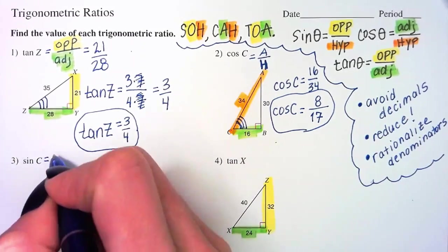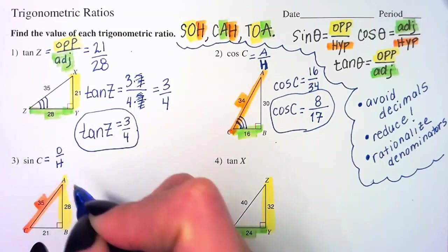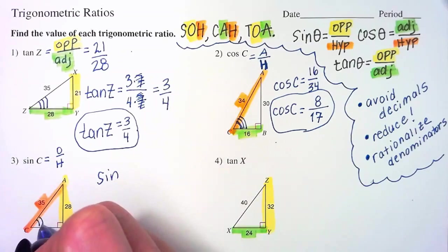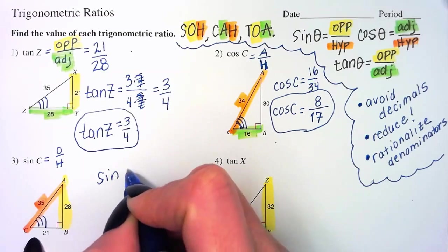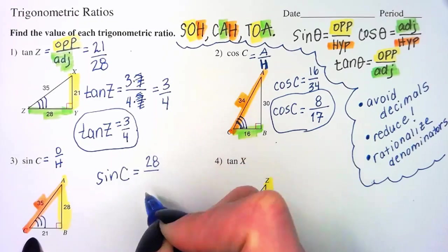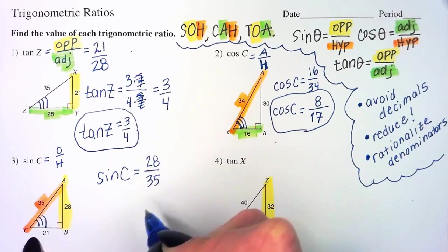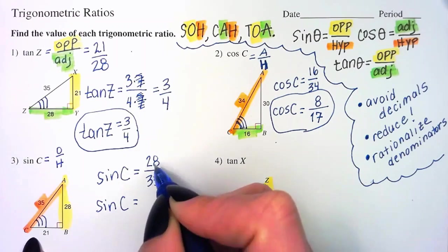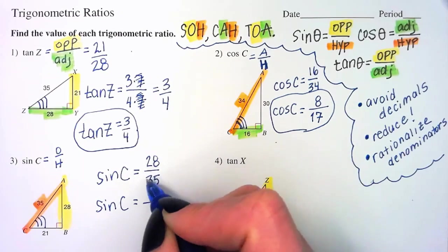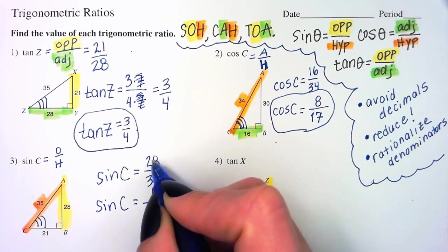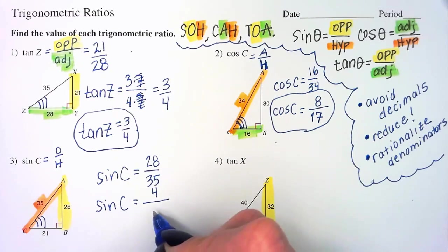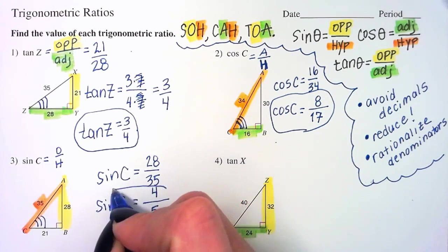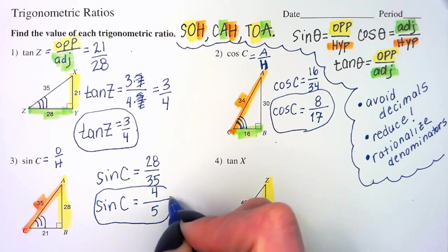Sine of C. Opposite over hypotenuse. Opposite is going to be, in relation to angle C, which is in the bottom left again, 28. Over hypotenuse, 35. What's the common factor? What is the greatest common factor between 28 and 35? That would be 7. So, if I can reduce out a 7 from each of these. Adios. We get 4 fifths.